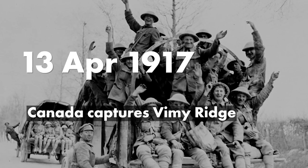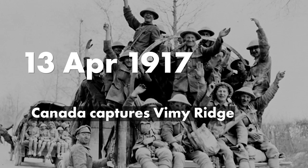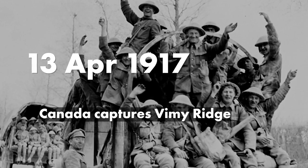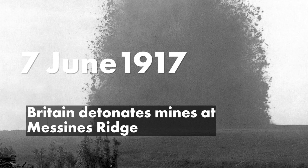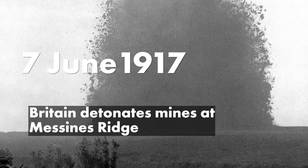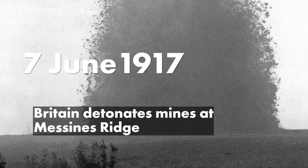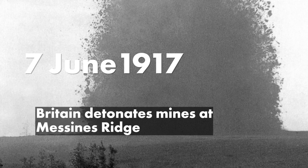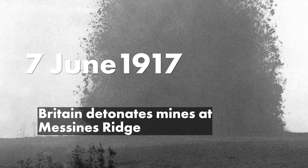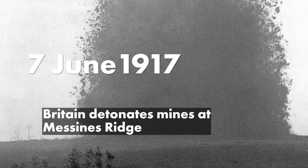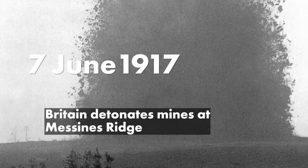On the 13th of April 1917, Canadian troops capture Vimy Ridge, seizing ground of great military importance and inflicting heavy casualties on the German army. On the 7th of June 1917, the British detonate 19 large mines containing some 455 tonnes of explosive under the Messines Ridge in Belgium. The resulting explosions can be heard as far away as London and Dublin. More than 10,000 German soldiers are killed and much of the fortifications along the ridge — and much of Messines itself — are destroyed.